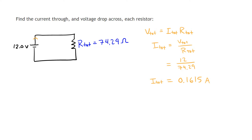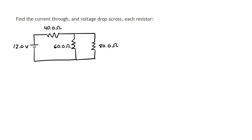In my final answer I'll round to three significant figures, but I'm keeping four sig figs for now and will show all final values at the end of the video. Now that we've found the total current coming out of the battery, we can see that it flows straight into the first resistor R1. I'll call this current I1, and it's the same as I total: 0.1615 amps.